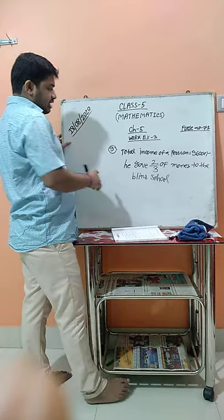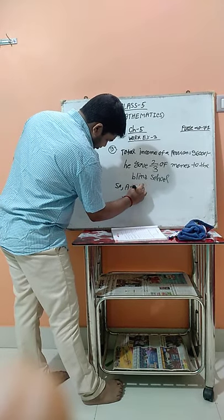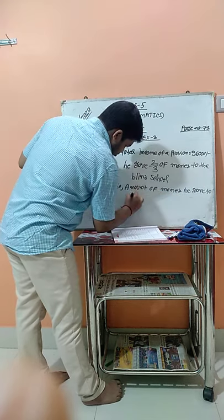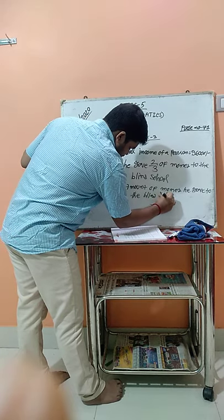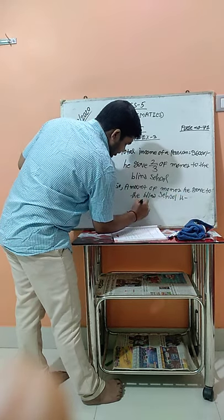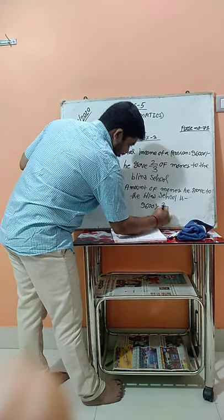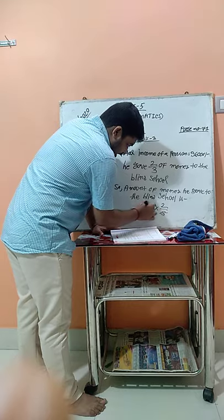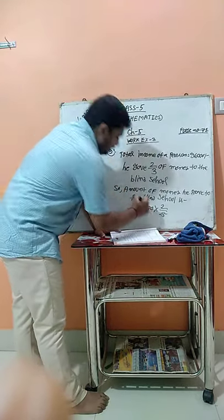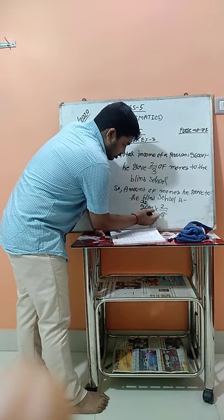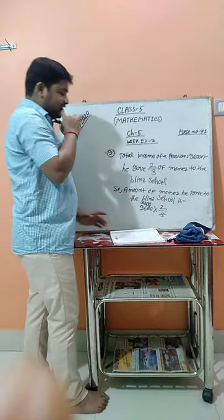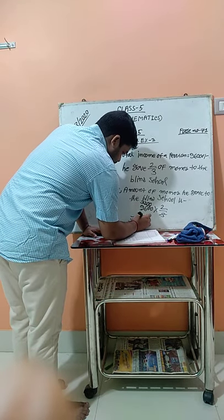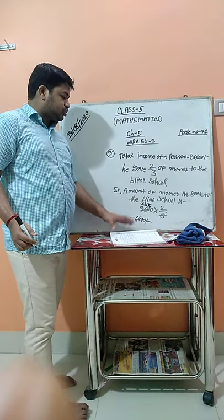So the amount of money he gave to the blind school: we substitute. First, we find 1/3 of 96,000. We divide 96,000 by 3: 9 divided by 3 is 3, 6 divided by 3 is 2, giving 32,000. Now we multiply 32,000 by 2.